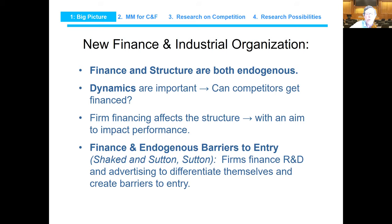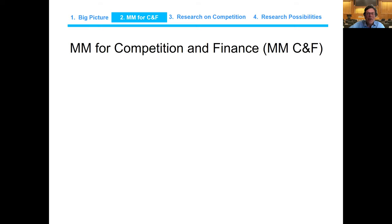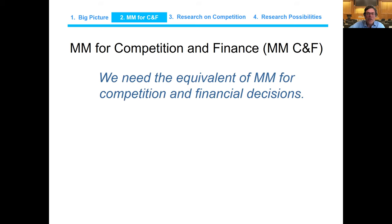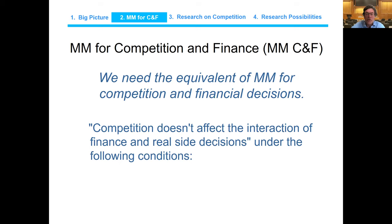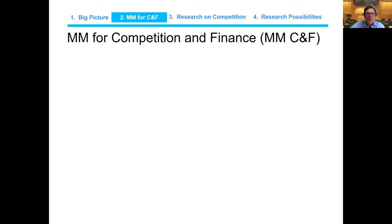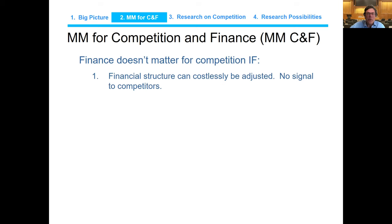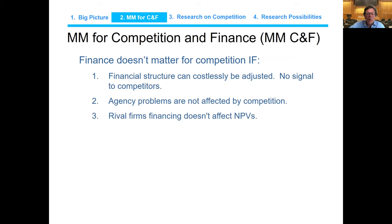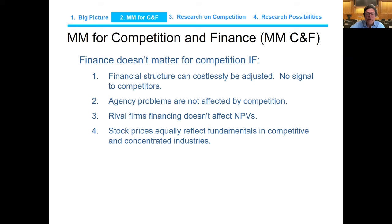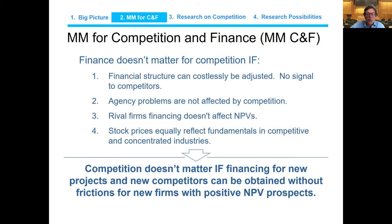We need an equivalent of the Modigliani-Miller theorem for competition in finance — conditions under which competition doesn't affect the interaction of finance and real-side decisions. Those conditions include: finance doesn't matter if we can adjust financial structure costlessly; there's no signal to competitors; agency problems are not affected by competition; rival firm financing doesn't affect NPVs; and stock prices equally reflect fundamentals in competitive and concentrated industries. We don't think these conditions hold. Competition matters because we want to finance projects and new competitors with positive NPV.